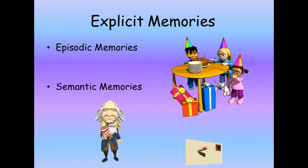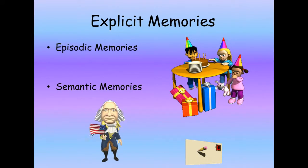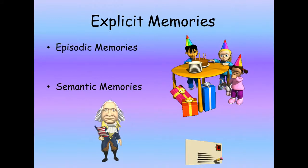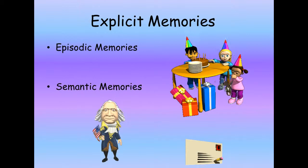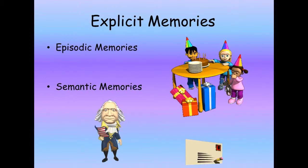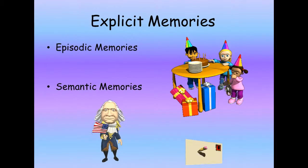Explicit memory can also be divided into two parts: episodic and semantic. Episodic memory involves the recollection of specific events, situations, and experiences — for example, your first kiss or your first day of high school. Semantic memory includes things that are common knowledge, such as the names of colors, the sounds of letters, capitals of countries, and other basic facts acquired over a lifetime.